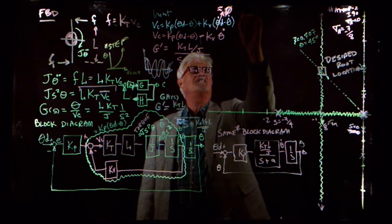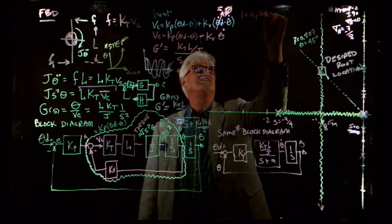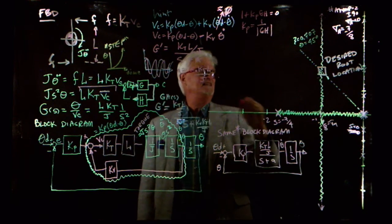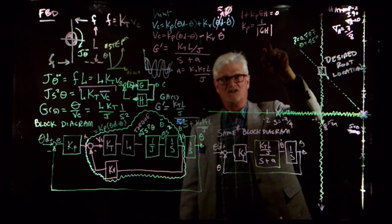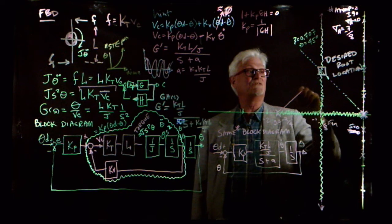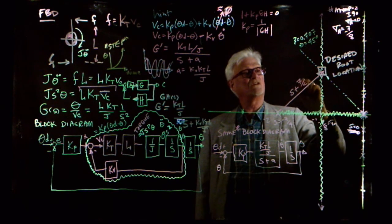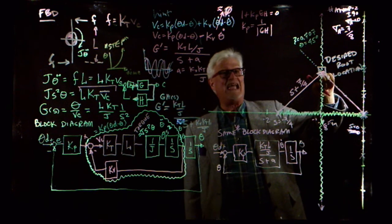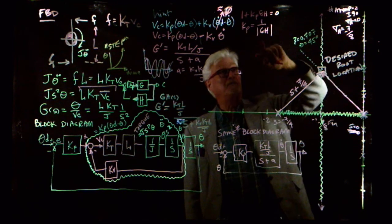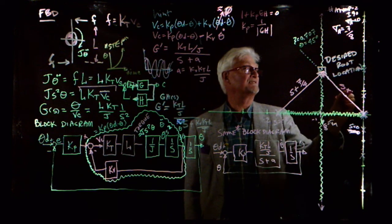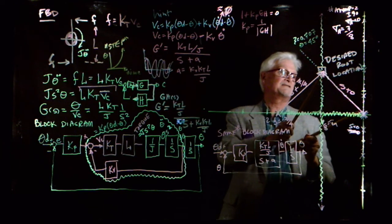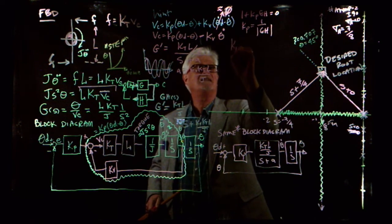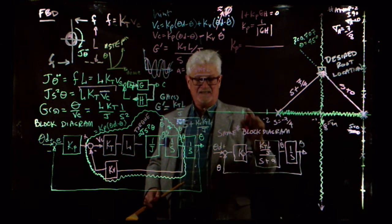What gain puts the roots of the characteristic equation exactly at that spot? Starting with 1 + K_P*G*H = 0, that means K_P equals 1 over the magnitude of G*H. G*H is a complex function represented by two vectors from the open-loop poles — S plus 0 and S plus 7/4 — to the desired S-plane point. Measuring those distances, I'll call them each 1.2.